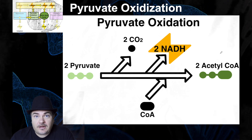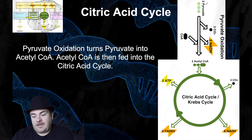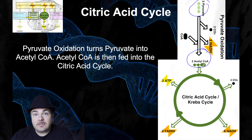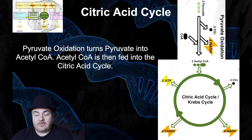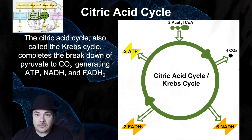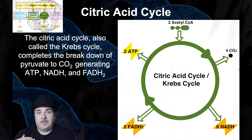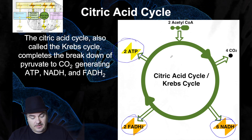Pyruvate oxidation happens inside the matrix of the mitochondria. After that minor stage, you have the second main stage: the citric acid cycle. Pyruvate oxidation takes the two pyruvates and turns them into two acetyl-CoAs, which are then fed into the citric acid cycle. The citric acid cycle will complete the breakdown of what originally started as glucose, all the way down into carbon dioxide. Since it's breaking things down, it releases energy, which is captured to charge up NADH, FADH2, and ATP batteries.